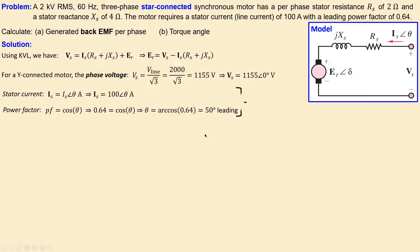Leading means this is a positive number. If it was lagging, we'd have minus 50 degrees. Our stator current in polar form is 100 at phase plus 50 degrees in amps.